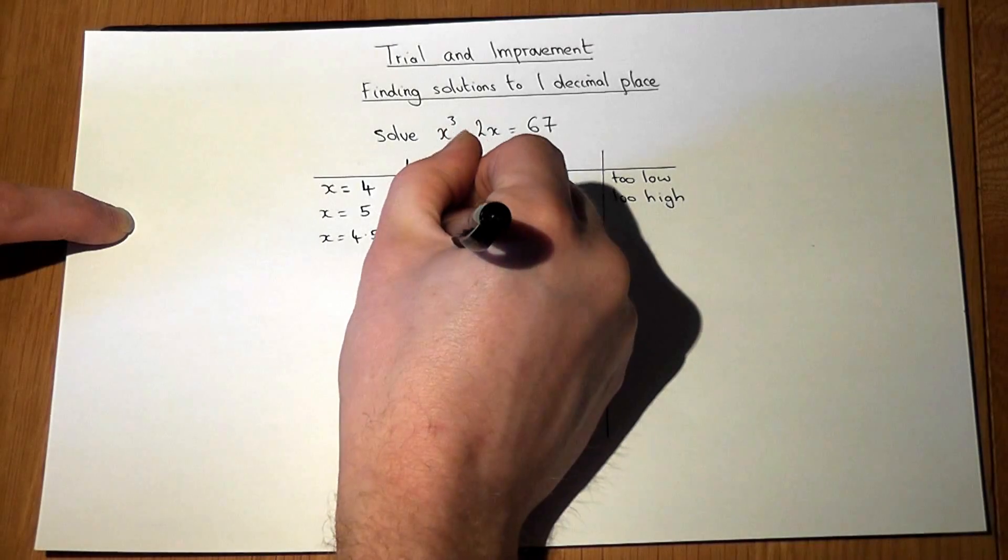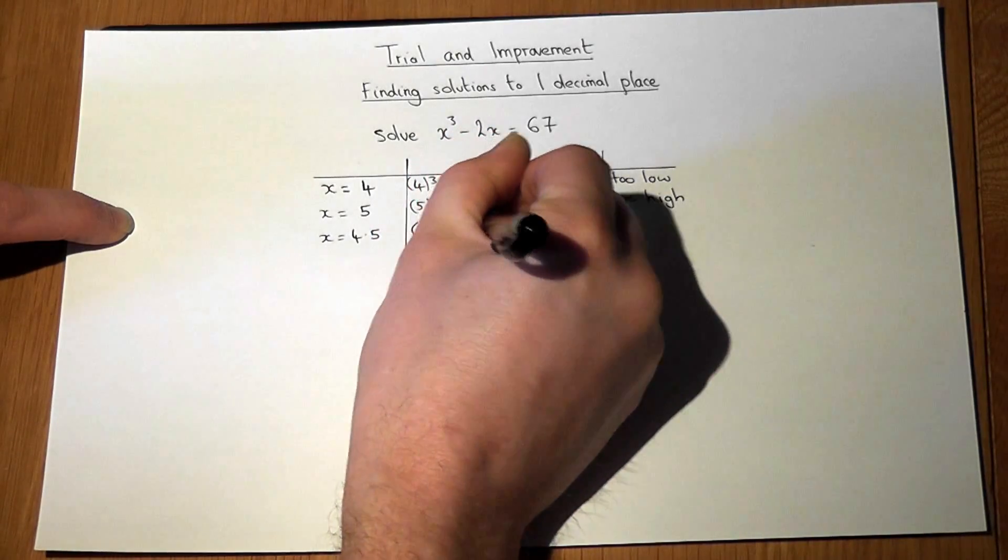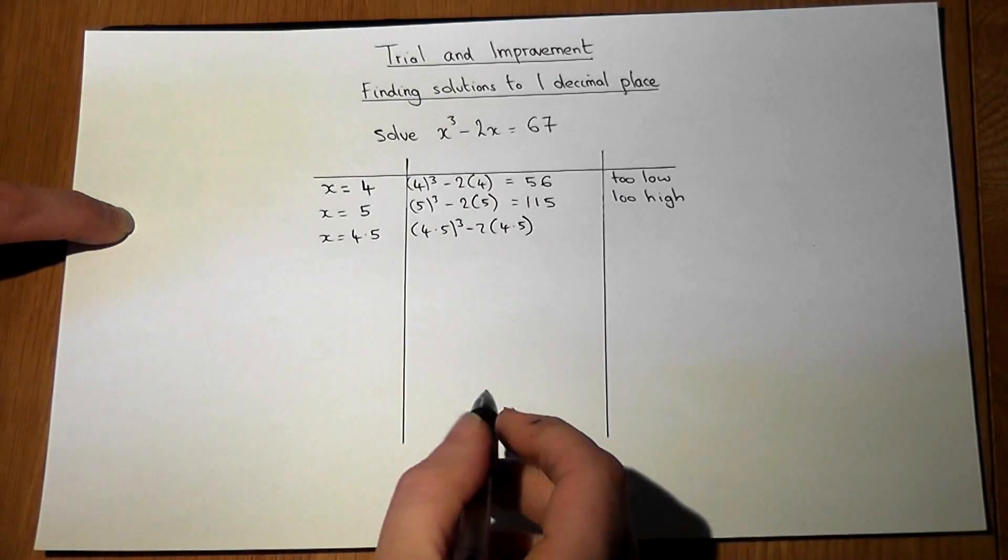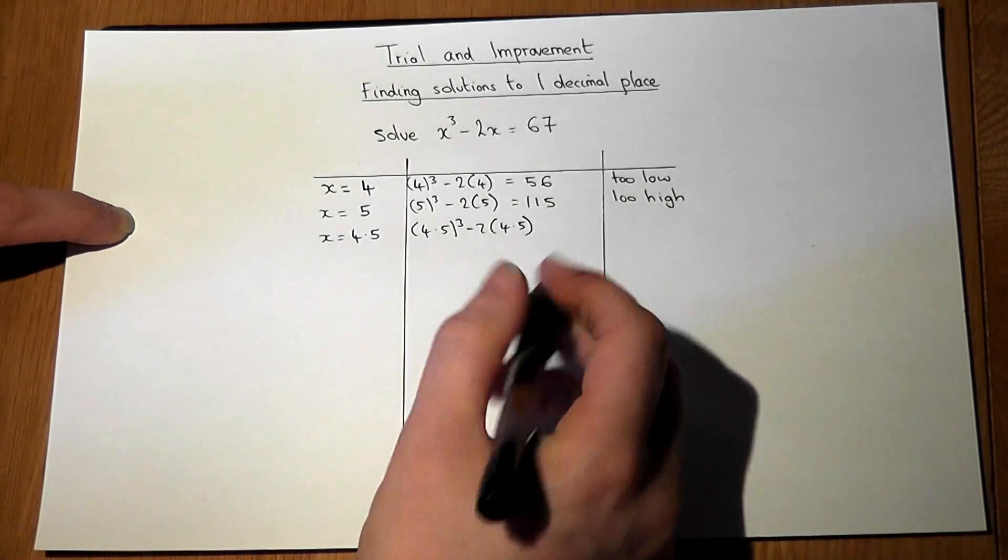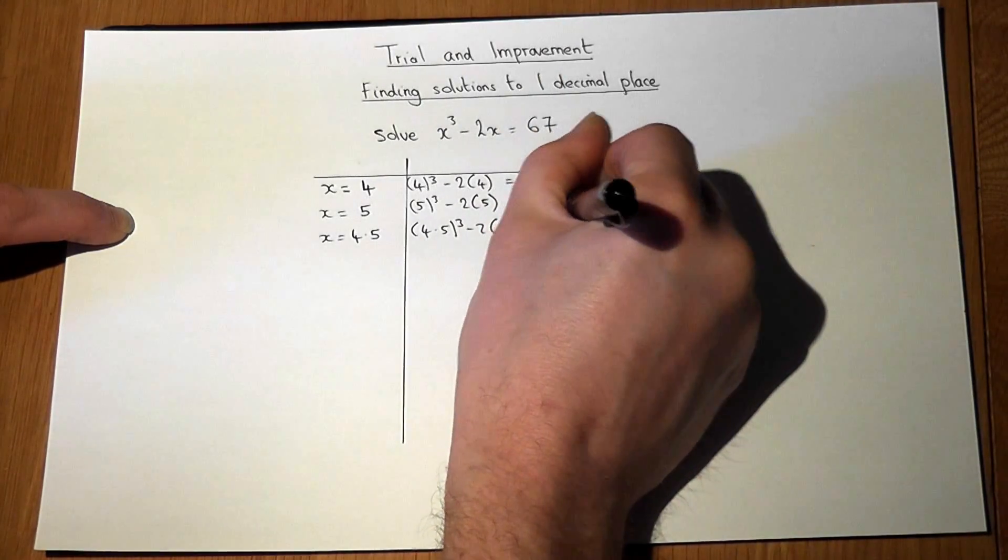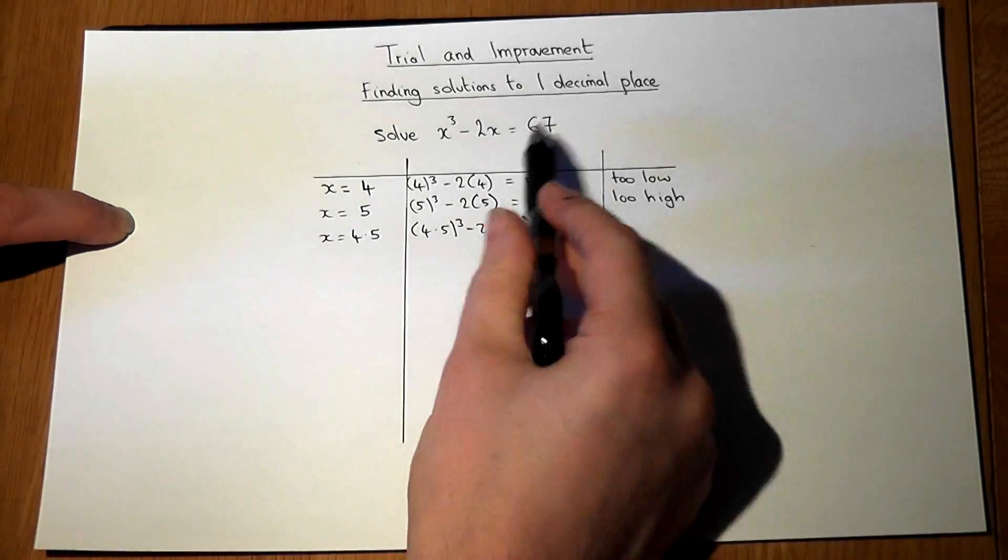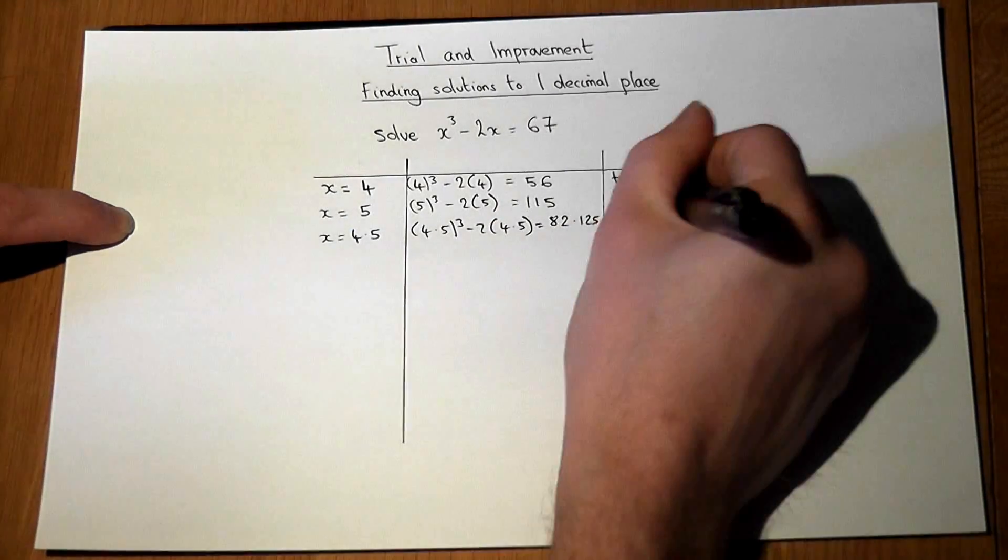So now we work out this on a calculator. We input it in as we see it and we get 82.125. So we're getting closer to that value of 67, but we're still too high.